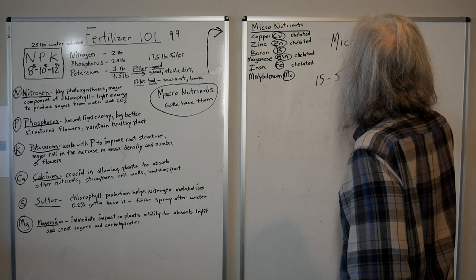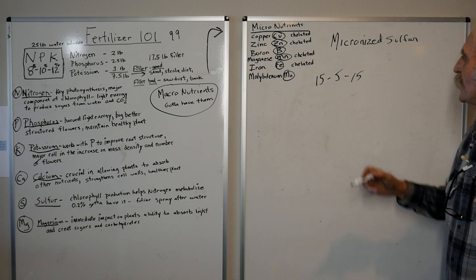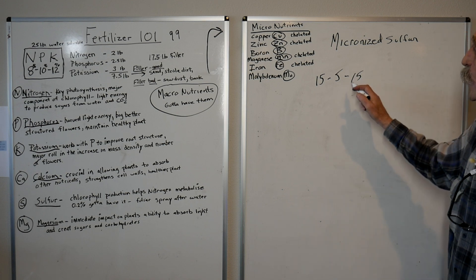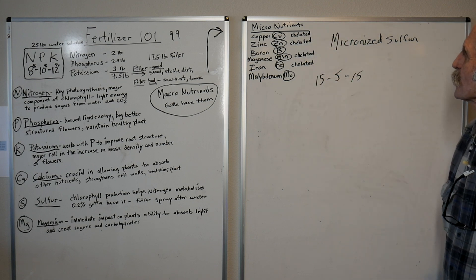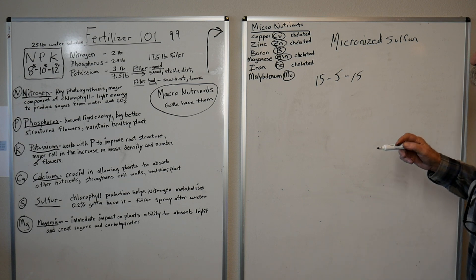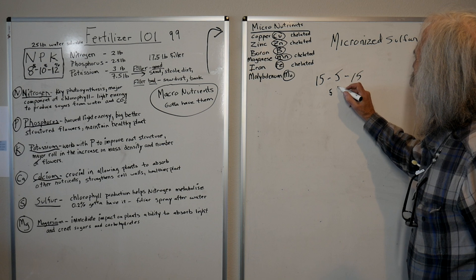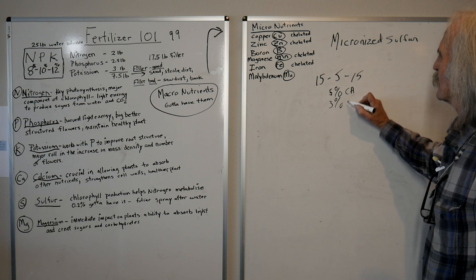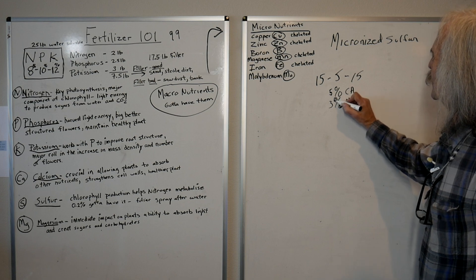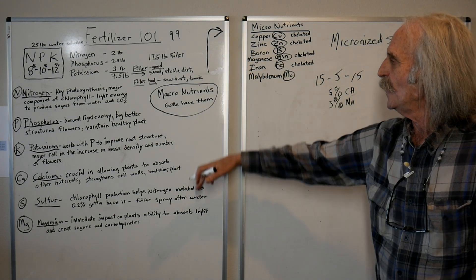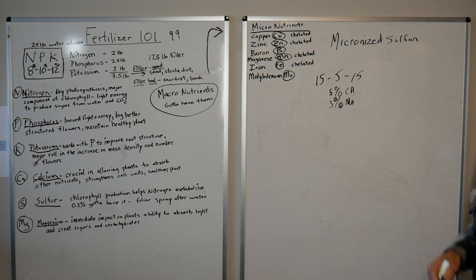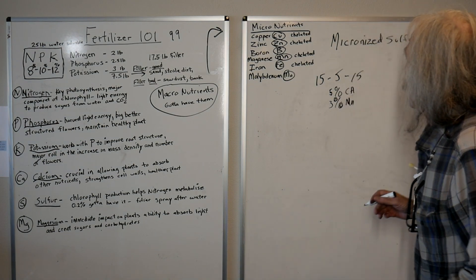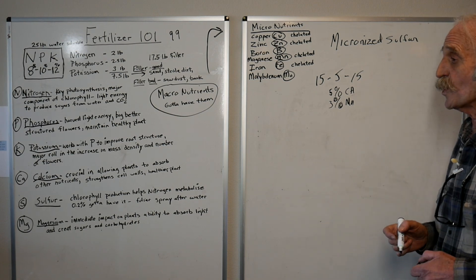15, 5, 15. 15 nitrogen, 5 phosphorus, 15 potassium, and this includes all the micronutrients you need. And also, it is 5% calcium and 3% magnesium. These are two real musts, as I said over here under the macronutrients. So that's what I use for veg, and I have absolutely beautiful plants. You've seen my plants in all stages. And I just don't mess with anything else. That's it. That's all I use.